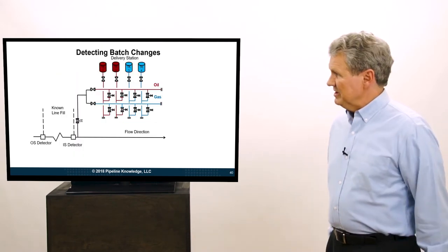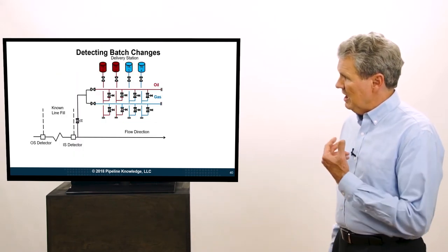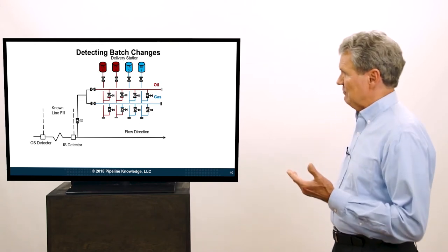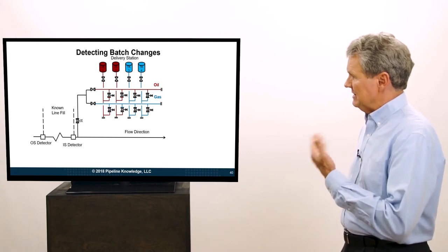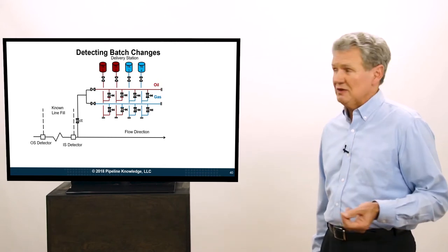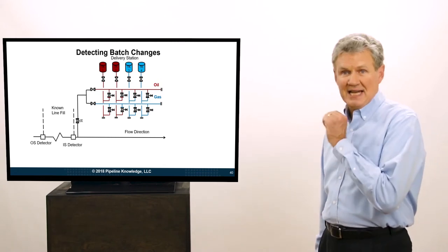One more batching example and then we'll go on to the next topic. So here we have a line and we have an intermediate delivery point. We have four tanks in here. We have an oil manifold and a gas manifold.